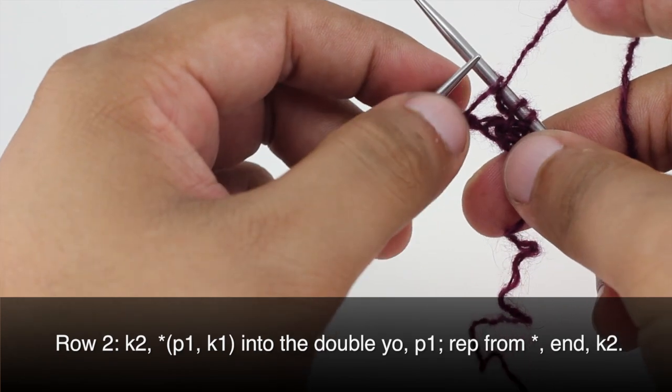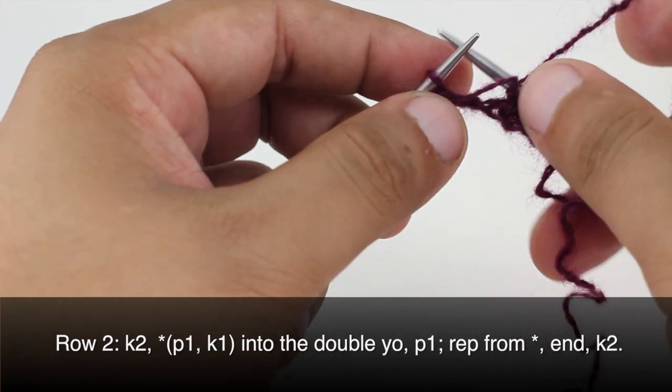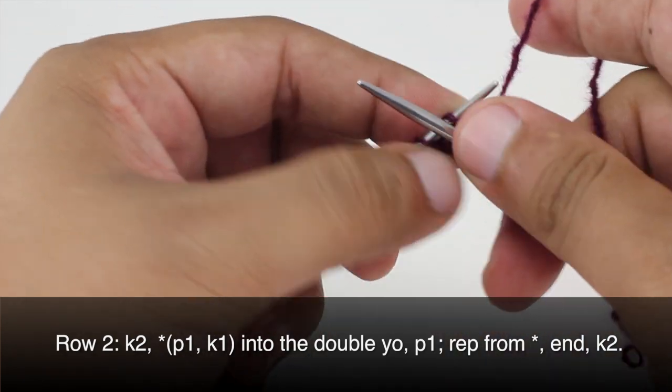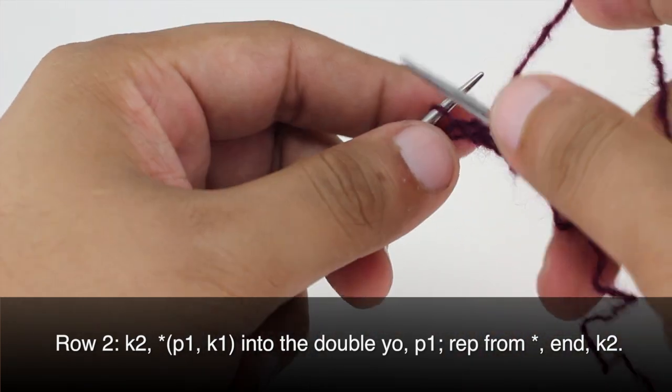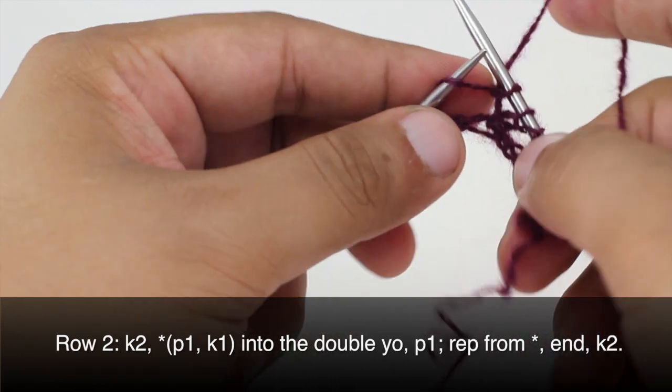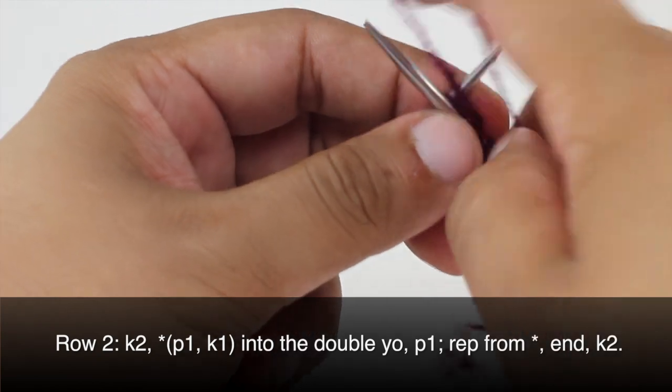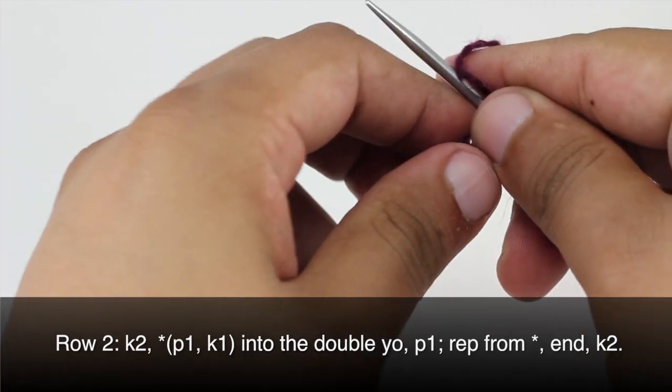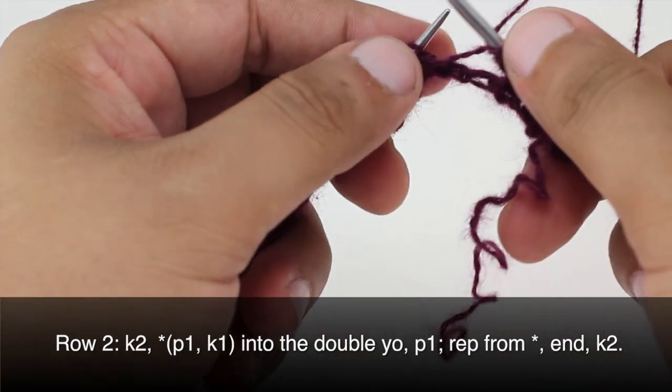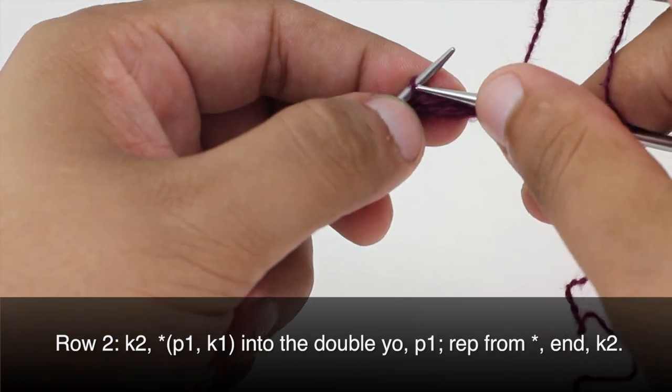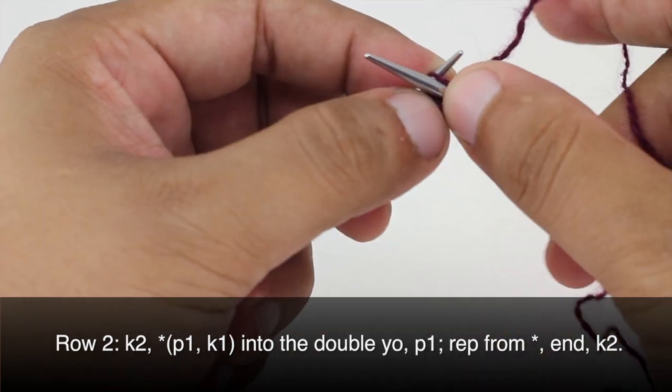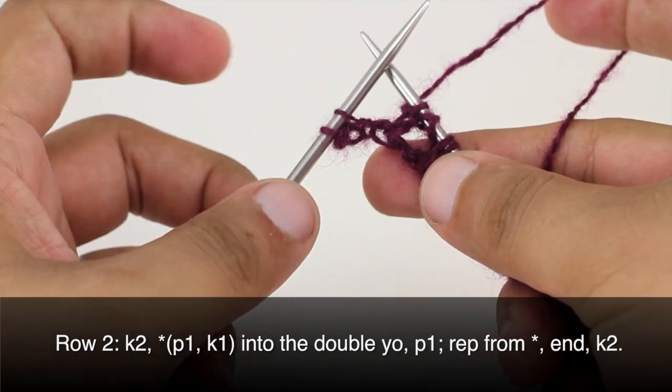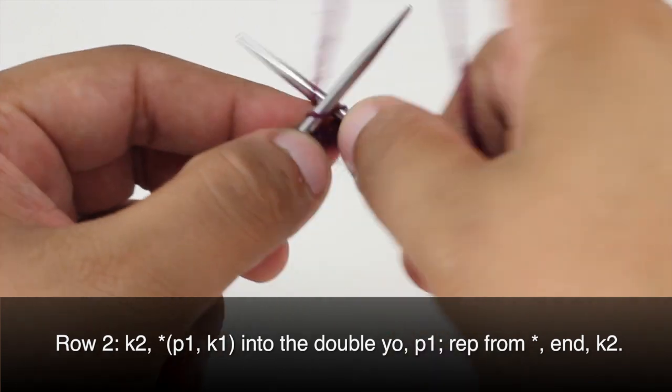We are going to repeat this all the way across. So we will purl 1, then do a knit 1 into the double yarn over, then purl 1 into the other half of the double yarn over. Repeat this to the last 2 stitches in the row. When we reach the last 2 stitches we are going to knit 2.